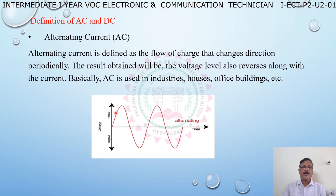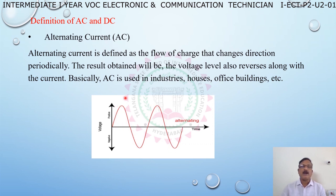Alternating current is a waveform in which the flow of charge changes direction periodically. This is the alternating current waveform.